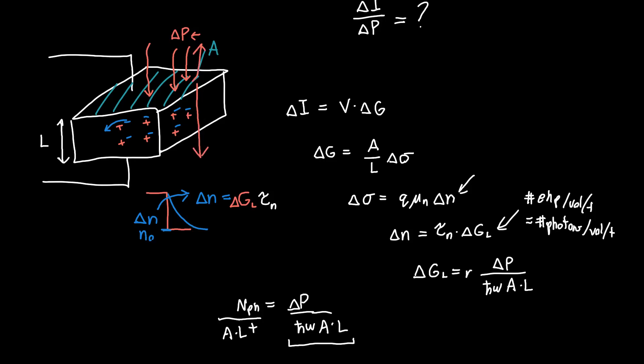We account for this by multiplying by some efficiency factor eta. In general, eta is less than one.